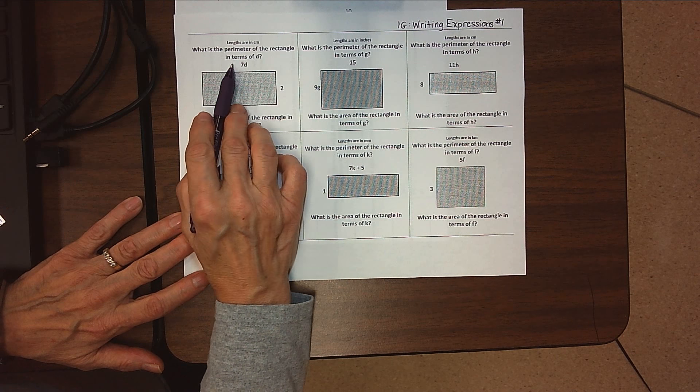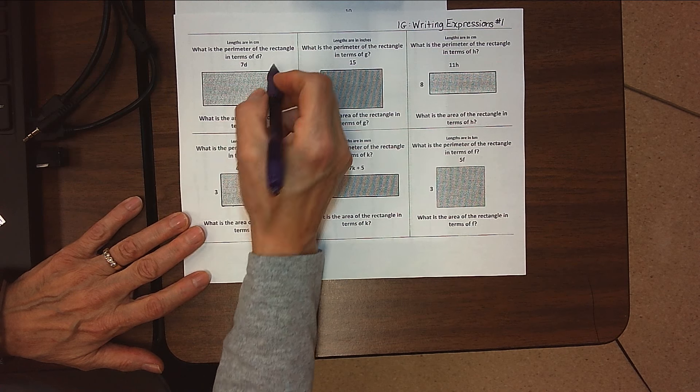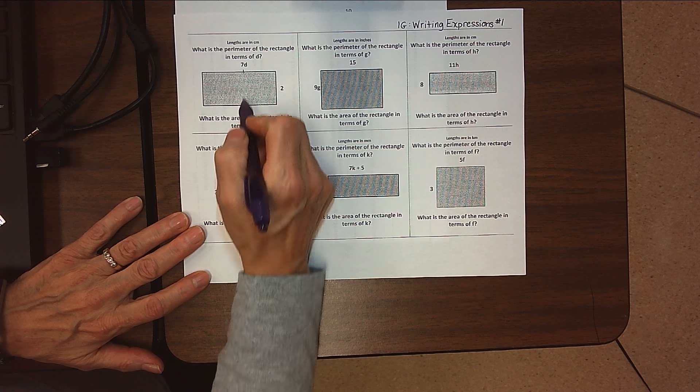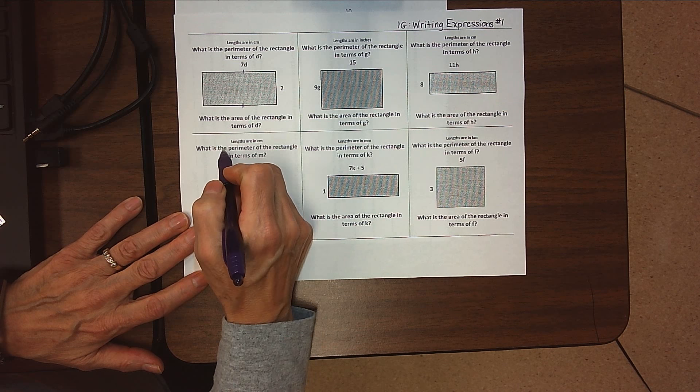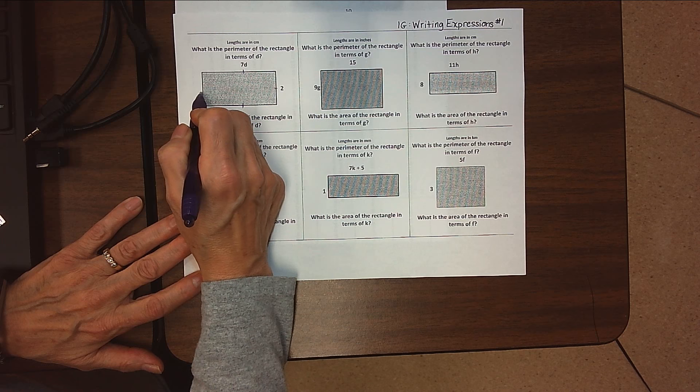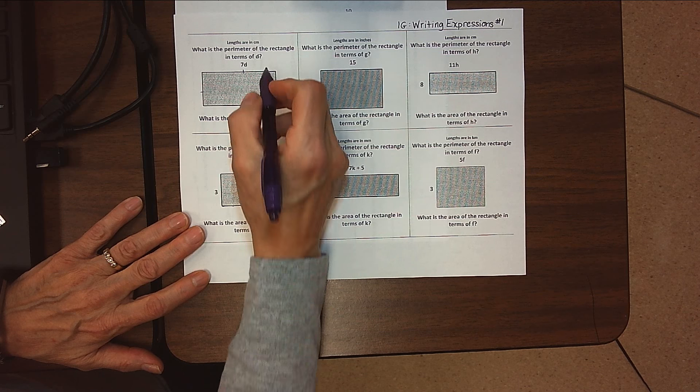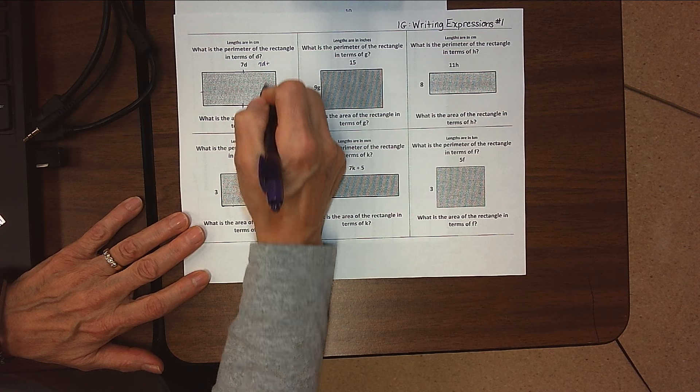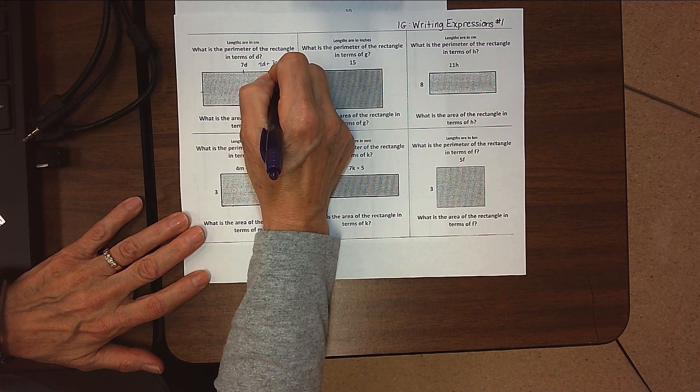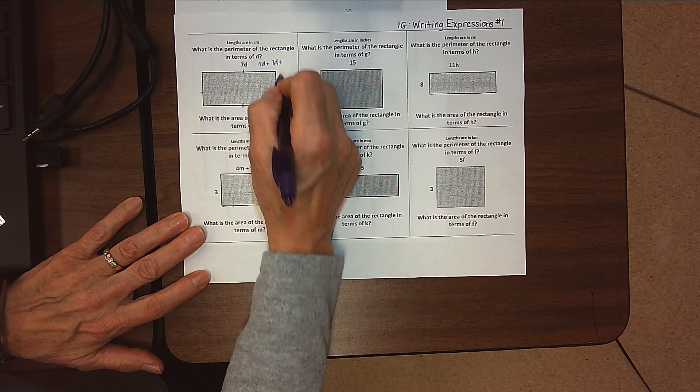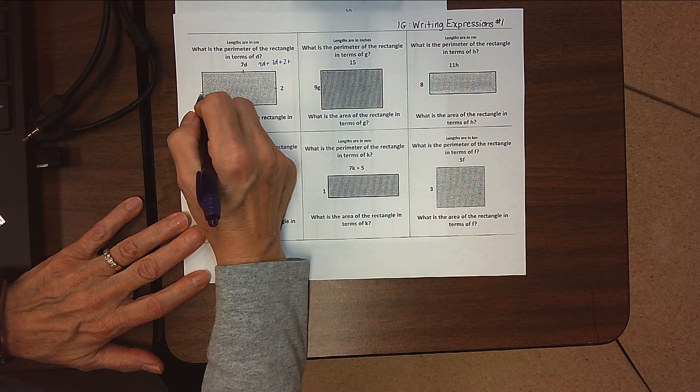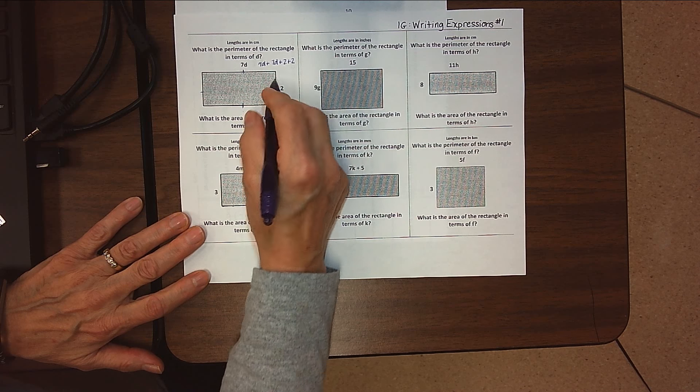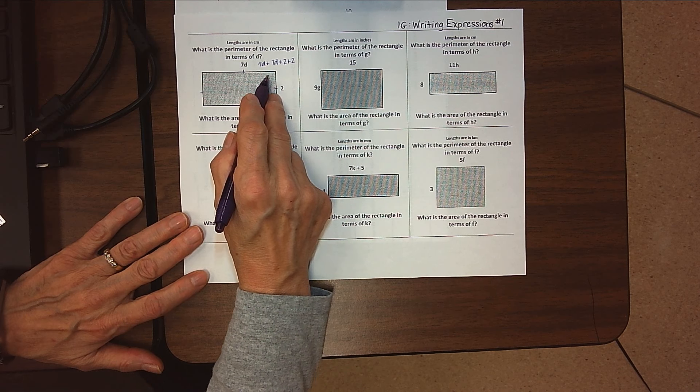I see one side is 7d and the opposite side is 7d. One side is 2 and the opposite side is 2. So right up here I'm just going to write 7d plus 7d plus 2 plus 2. Remember, the order isn't important as long as I keep the 7d together.